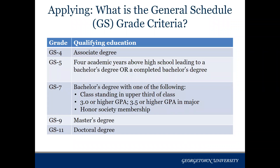So what is the GS schedule and what does it mean? Basically it tells you what levels you are qualified for as a student. To qualify for a GS-4 position you need an associate's degree or about two years of college-level experience. GS-5 is equivalent to four academic years above high school leading to a bachelor's degree, or a completed bachelor's degree — so even a fifth-year senior can go for a GS-5. GS-7 requires a bachelor's degree with one of the following: a class standing in the upper third proven through your transcript, a 3.0 or higher GPA, a 3.5 or higher GPA in your major, or an honor society membership. For many students at Georgetown, they typically qualify for GS-7 upon graduation. When looking at internships, you're generally looking at a GS-4 or GS-5 level.